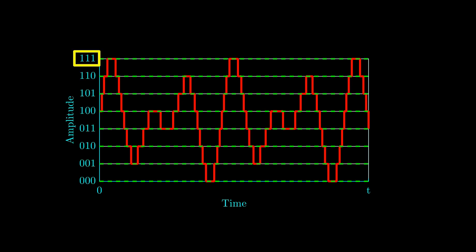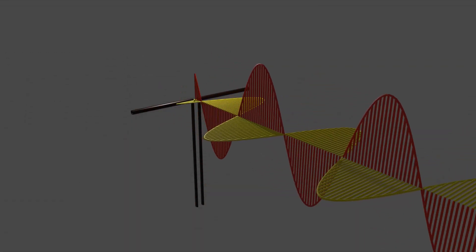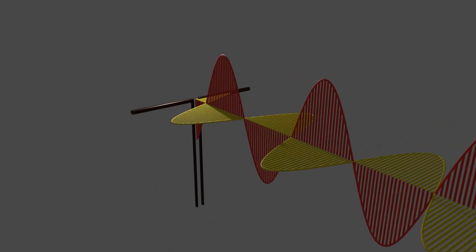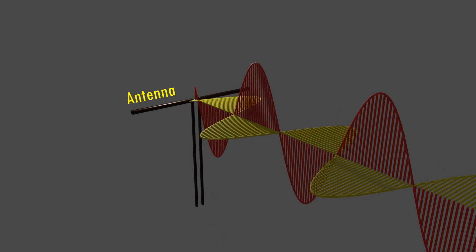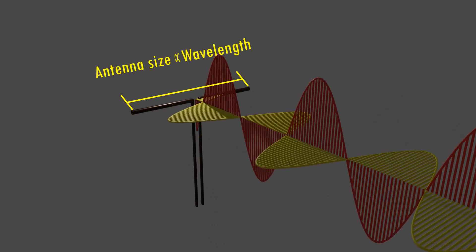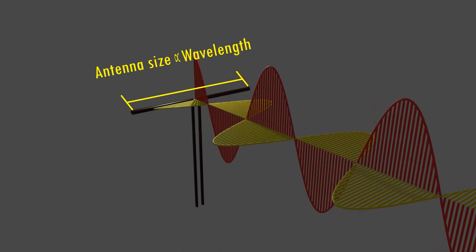Once digitized, the signal is represented using binary numbers. For example, the maximum level could be represented as 111 and the minimum as 000. But how do we transmit these digital bits wirelessly? The answer lies in electromagnetic waves, which travel through free space at the speed of light. These waves are transmitted using antennas.